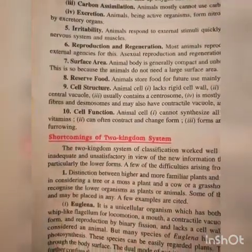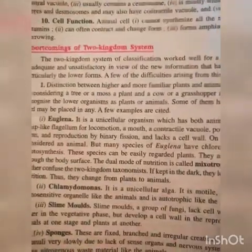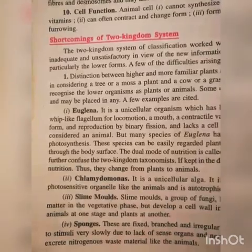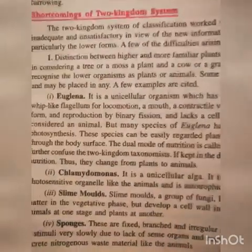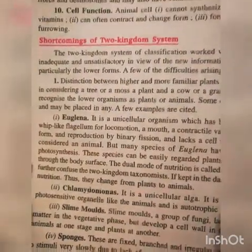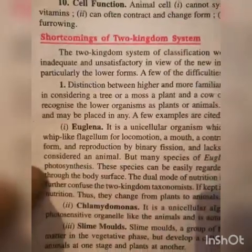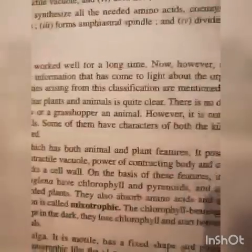Shortcomings of the two kingdom system: The two kingdom classification system has following shortcomings — it is unable to satisfy scientists in classifying all living organisms. The two kingdom system worked well for a long time, but now it seems inadequate and unsatisfactory in view of new information that has come to light about organisms, particularly the lower forms.